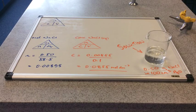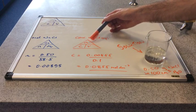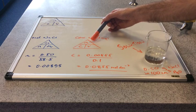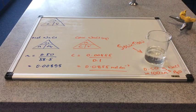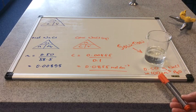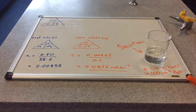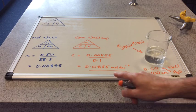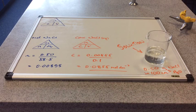The moles we've just calculated feed into the concentration triangle. So 0.00855 is the n term — the number of moles — and we divide that by the volume in dm³. We were given the volume in cm³, but dividing by 1000 converts it to dm³. That gives a concentration of 0.00855 moles per dm³.